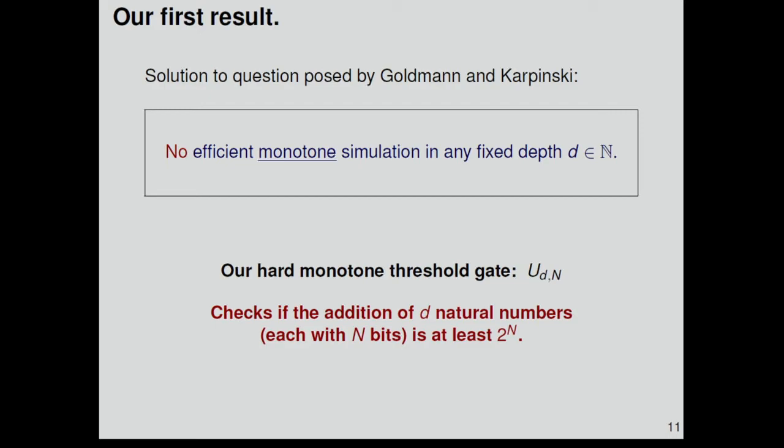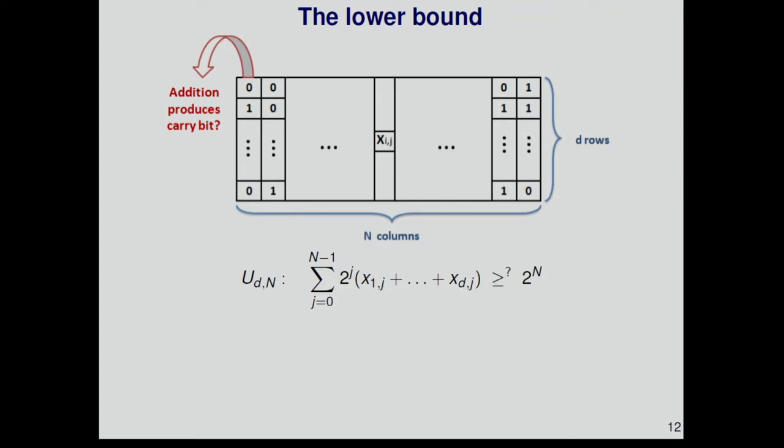The function we use is an extension of the function used by Hoffmeister. We call it u_d,n, and it means the following. The input for this function is d natural numbers represented in binary with n bits, and we want to check if the sum of these numbers is at least 2 to the n. Addition is a highly non-monotone function, but since here we are checking if it's at least 2 to the n, this definition gives a monotone function. Here's a picture representing this function. We have these d rows, each one containing one of the numbers, and we have the n columns. We want to add them and check if this addition produced some carry bit.